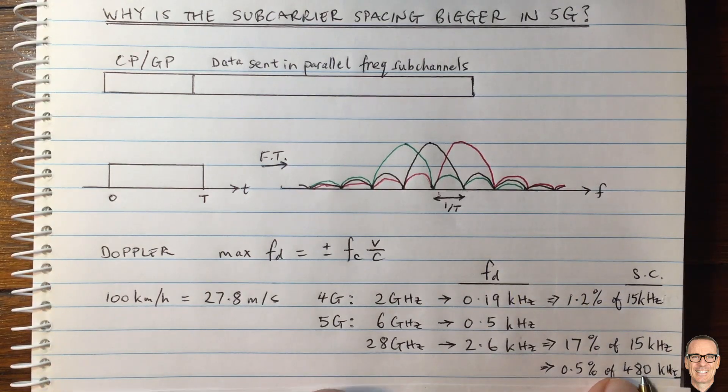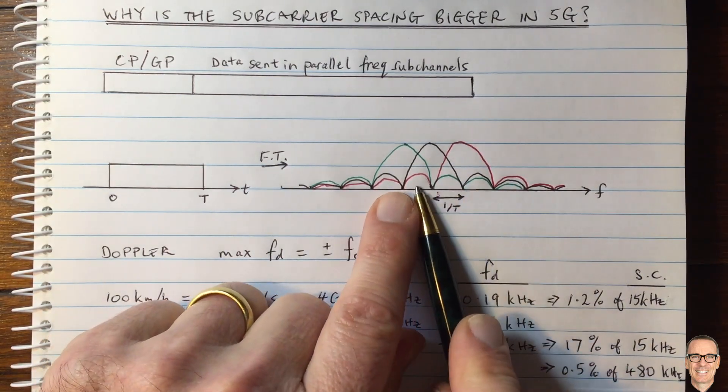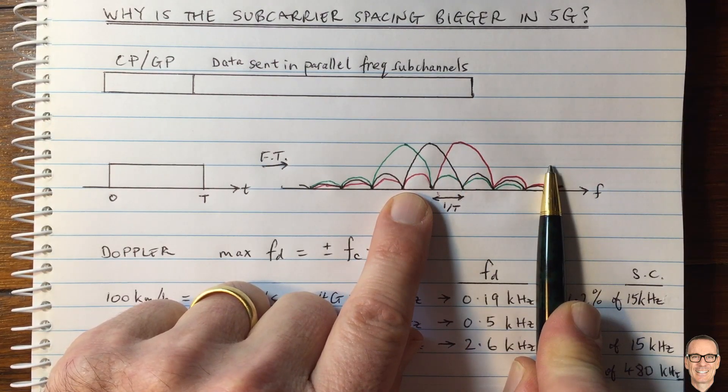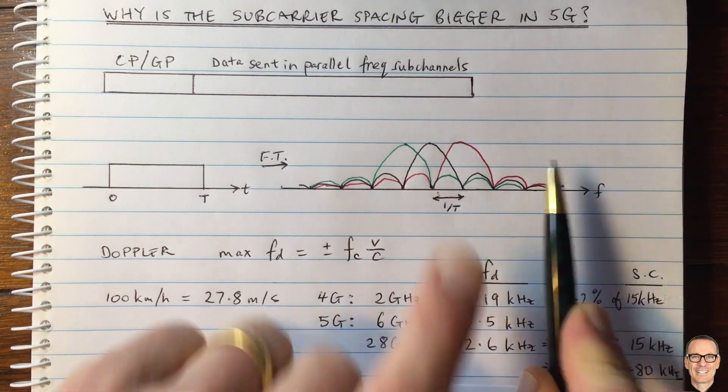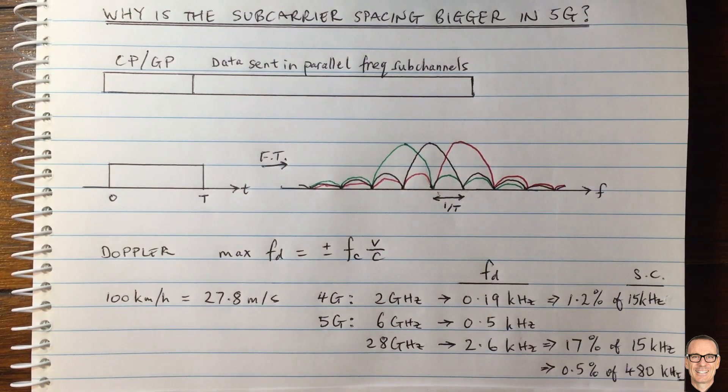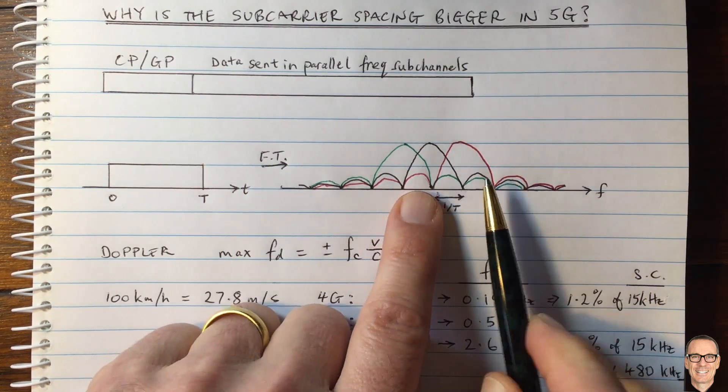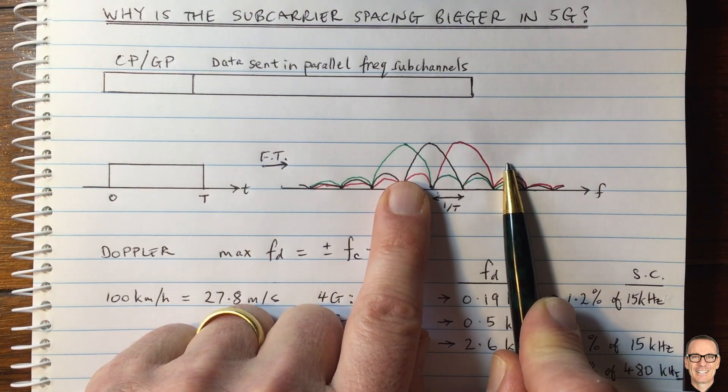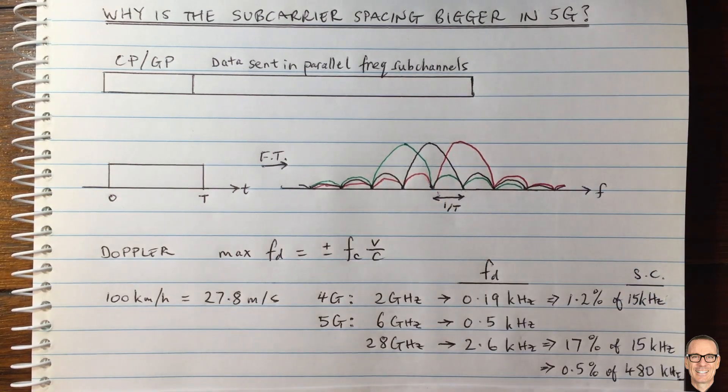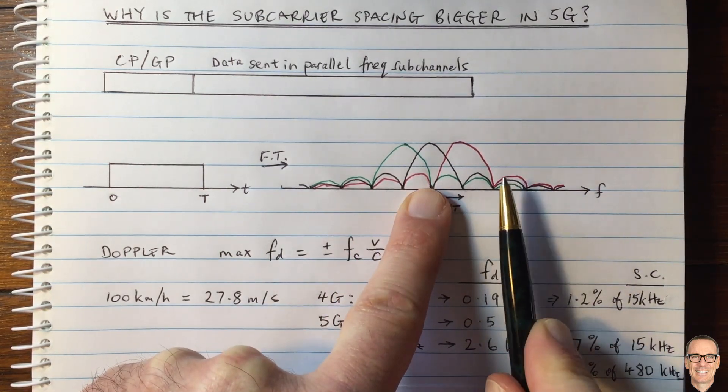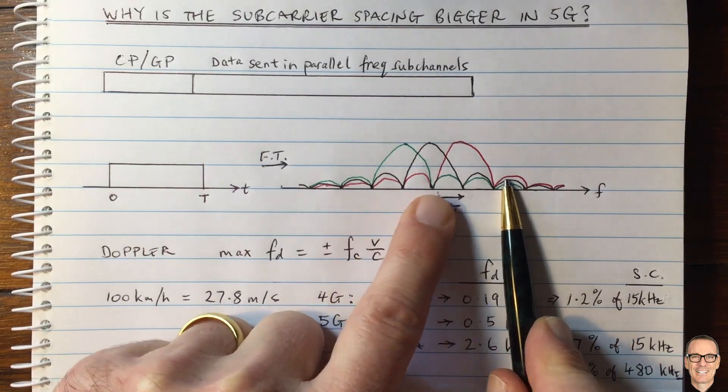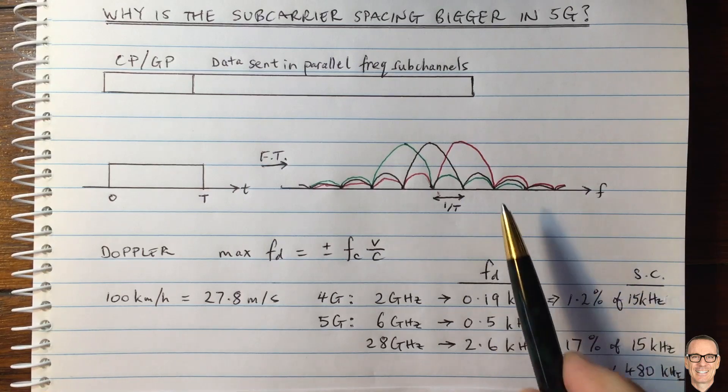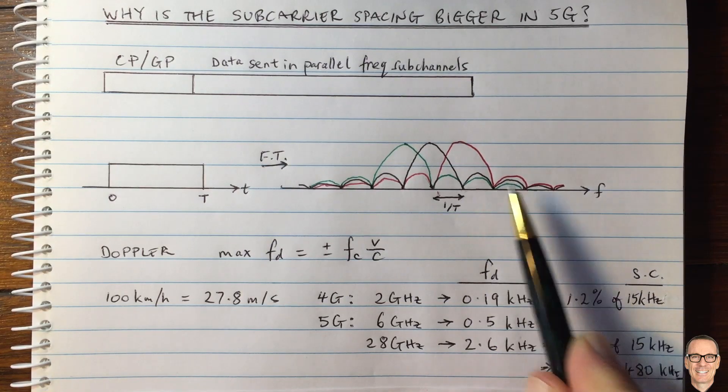Another thing you could do, actually, instead of using wider sub-carriers, is you could use the same sub-carriers, but only put data in every second sub-carrier. The problem with that, of course, would be that you're going to be only able to send it half the data rate. Another thing you could do is you could put them in every second sub-carrier and actually make the sub-carrier spacing smaller. That would enable you to then have more sub-carriers, but still you wouldn't get enough in comparison to having the wider sub-carriers and then putting up with the inter-carrier interference and managing the inter-carrier interference.